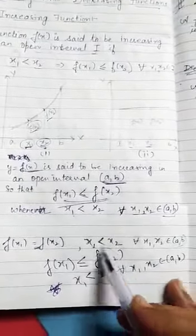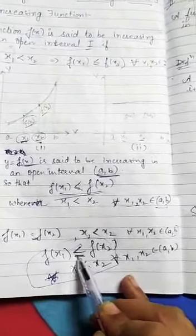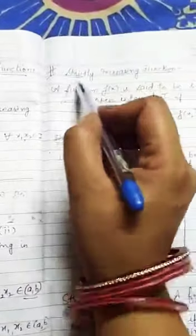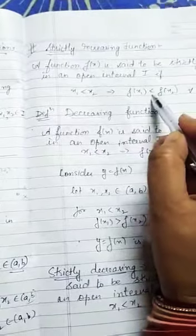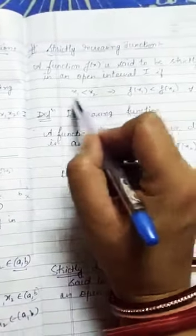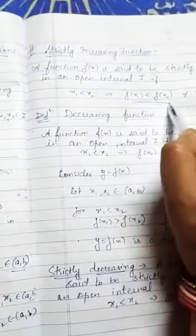So this function is called an increasing function — if f(x1) is less than or equal to f(x2). Then what function is strictly increasing? When the word 'strictly' comes, there will be no equality. When x1 is less than x2, the function's value will be strictly less than — here there will be no equality.